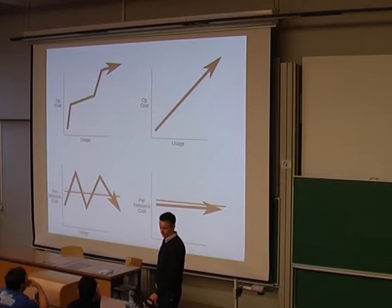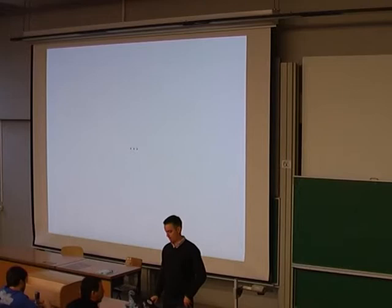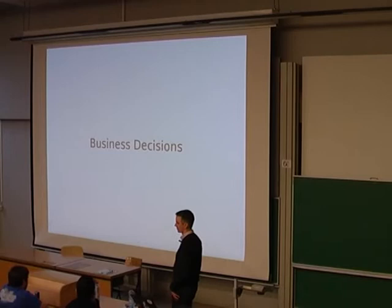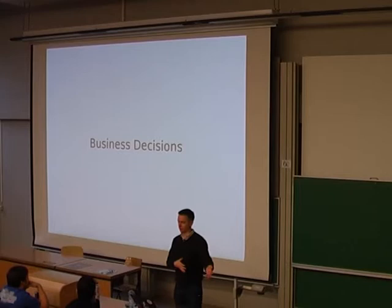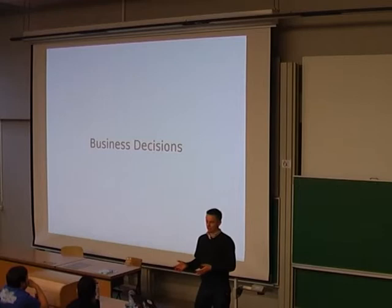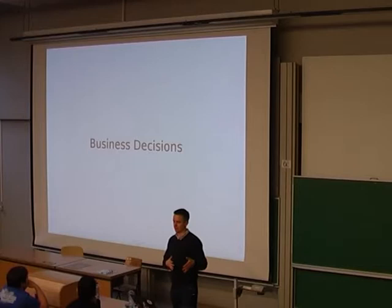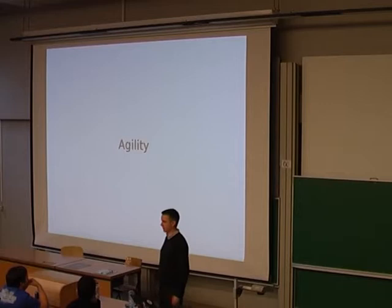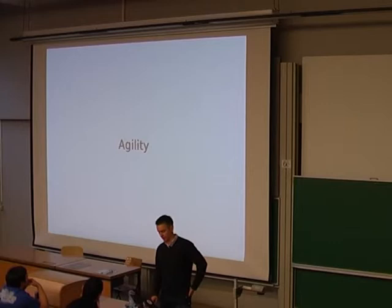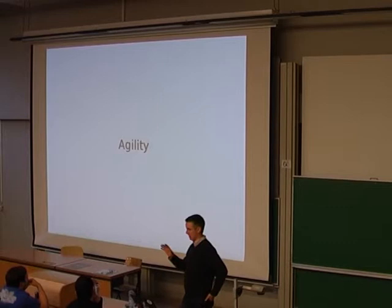All of this — competition, service levels, pricing model — these are business decisions. There's a business person who wants to be making all those decisions, and if you're deploying your cloud, you want to set it up to make it easy to make those decisions and change them. Because the business person wants agility — they want to be able to change their mind about service levels, pricing, costs, and margins. And as a person deploying OpenStack, how do you make that possible?